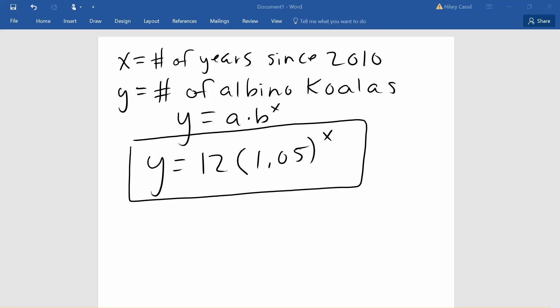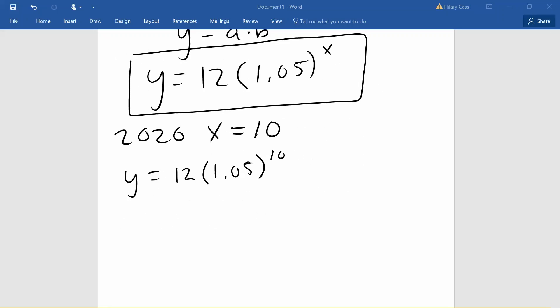Our first question was how many albino koalas should we expect in the year 2020? Well, this is 10 years after our starting point, so we're going to let x be 10 in our equation. What we will plug into the calculator will be 12 times 1.05 to the power of 10, and if we round, we'll get a value of about 19.5.